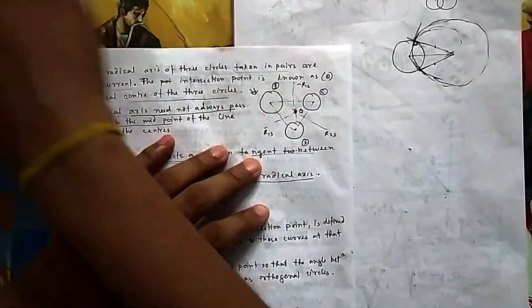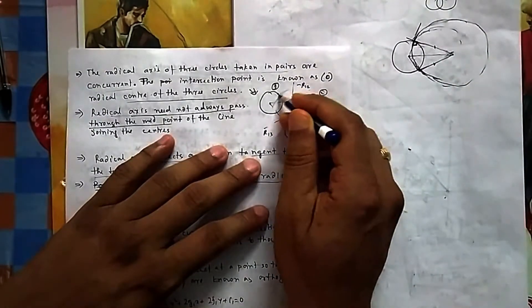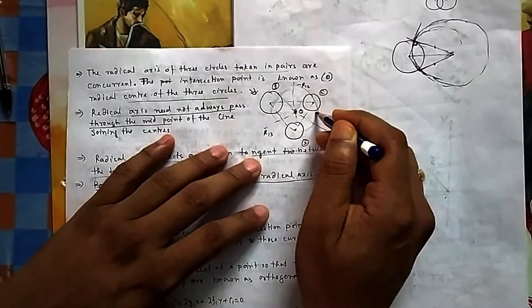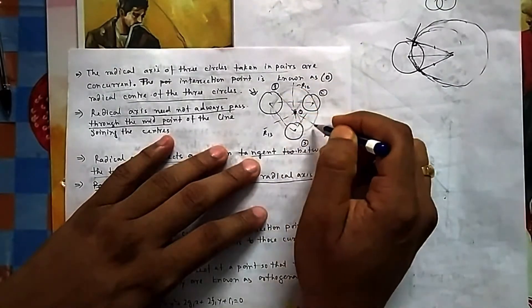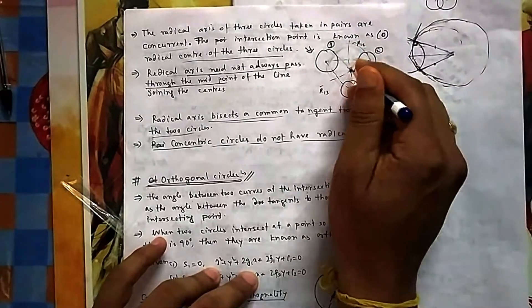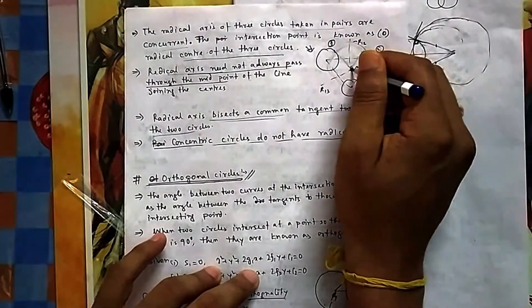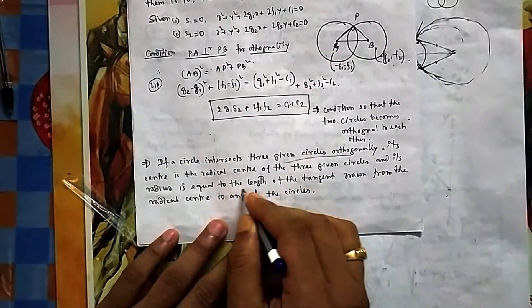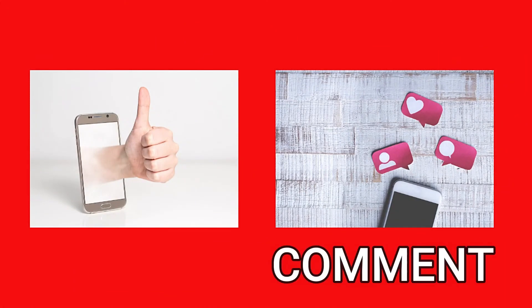If you draw a circle through those tangent points for all three circles — taking the radical center as center and that tangent length as radius — because all tangent lengths from the radical center are equal, this circle will cut each of the three given circles orthogonally. So the conclusion is: a circle that intersects three given circles orthogonally has its center at the radical center, and its radius equals the length of the tangent from the radical center to any of the circles. If you liked the video, press the like button and give your valuable comments.